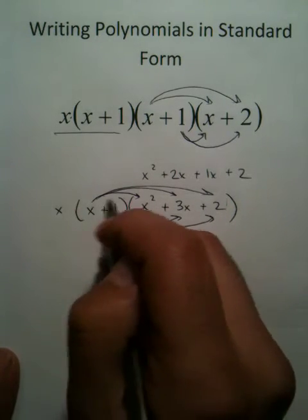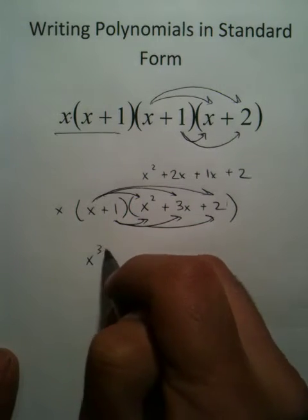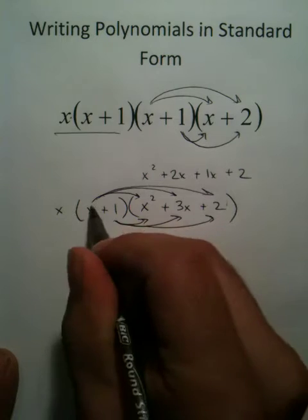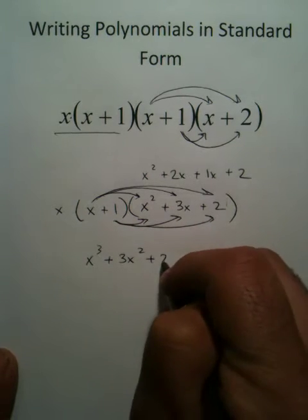x times x squared is x to the third, x times 3x, 3x squared, x times 2, 2x.